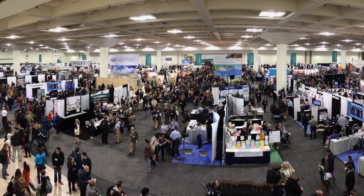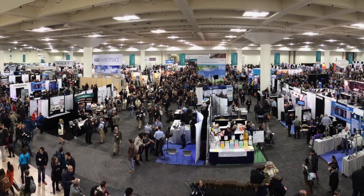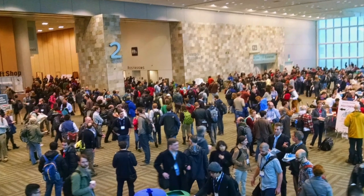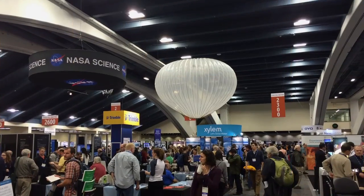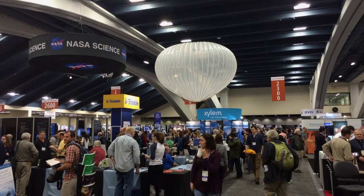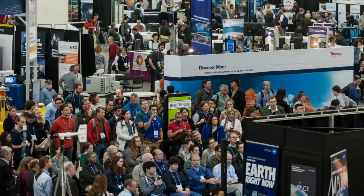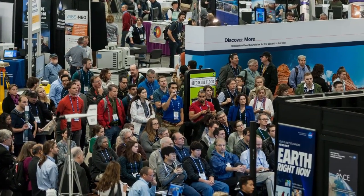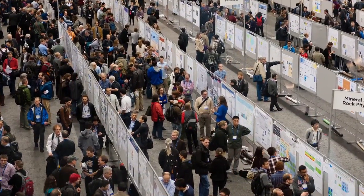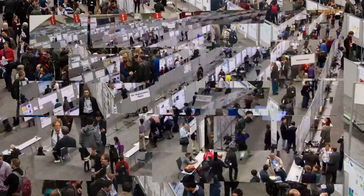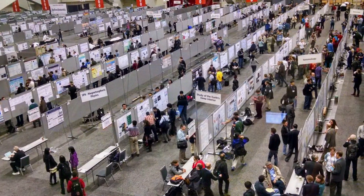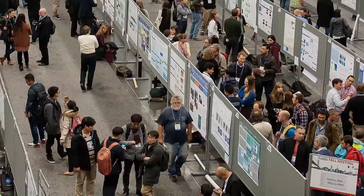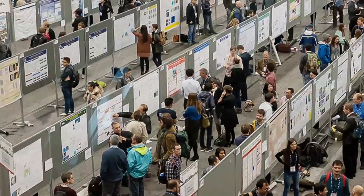The AGU Fall Meeting, the largest and most prestigious earth and space science meeting in the world, is the premier place to showcase your research to an international audience. With over 20,000 oral and paper presentations, how do you make sure your research is discovered and stands out from the crowd?